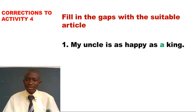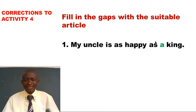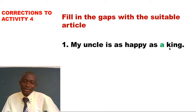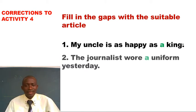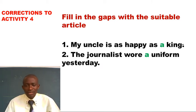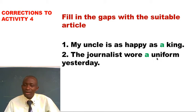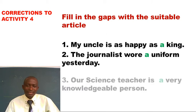Number 1 says: 'My uncle is as happy as a king.' What was tested was 'a', because the next word begins with a consonant sound. Number 2 says: 'The journalists wore a uniform yesterday.' A uniform — yes, we have a vowel letter, but the sound for this word is not a vowel; it is a consonant sound U.